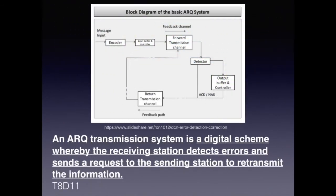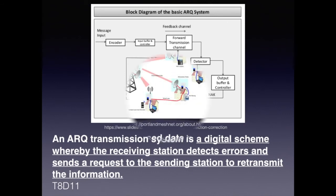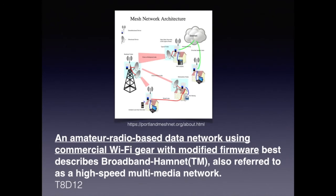ARQ is an acronym that means Automatic Repeat Request. For the exam, know that an ARQ transmission system is a digital scheme whereby the receiving station detects errors and sends a request to the sending station to retransmit that information. Another cool thing you can do as an amateur radio operator is create your own private internet with much more power. For the exam, know that an amateur radio based data network using commercial Wi-Fi gear with modified firmware best describes Broadband-Hamnet, also referred to as High-Speed Multimedia Network.